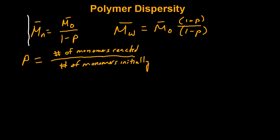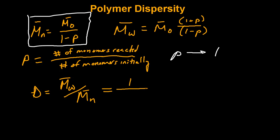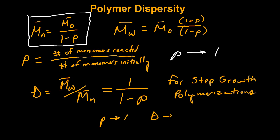Looking at the number average molecular weight equation as conversion goes towards 1, dispersity equals MW over MN. Using these equations, you can say that dispersity for step growth polymerization systems is 1 over 1 minus P. So theoretically, for step growth polymerizations, as P approaches 1, the dispersity will approach 2.